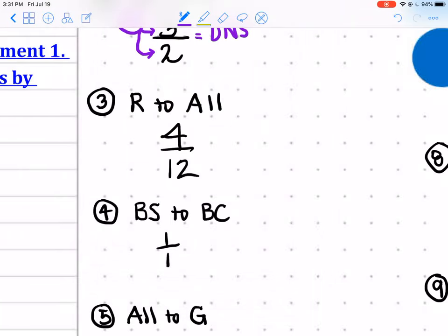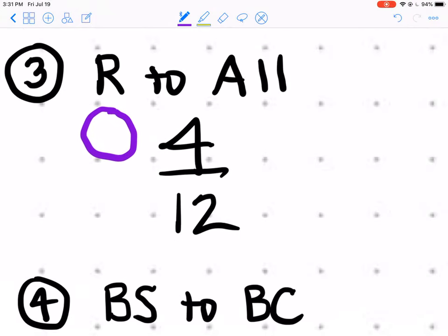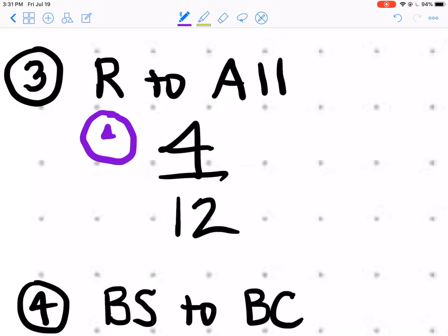I'm up to number three which is asking for the red items to all items and so I need a bubble that will work for a 4 and a 12 and hopefully you know that that's a 4. This goes back to your times tables, knowing the multiplication tables. 4 into 4 is 1 and 4 into 12 is 3.